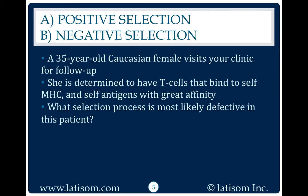A 35-year-old Caucasian female visits your clinic for follow-up. She is determined to have T-cells that bind to self-MHC and self-antigens with great affinity. What selection process is most likely defective in this patient?